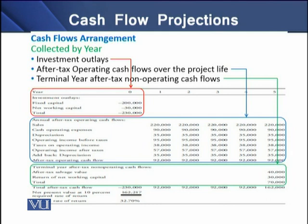The first is the investment cash outflows, also called initial cash outflows. These occur at the start of the project and are placed because of investment in fixed assets and investment in net working capital items. Then we have operating cash flows, computed after tax, which are generated through the normal business operations of the project. These cash flows are related to the project's sales, cash operating expenses, and taxes on the project's income.